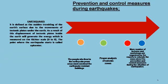The second disaster is earthquakes. An earthquake is defined as the sudden trembling of the earth's surface due to the movements of tectonic plates under the earth. The displacement of tectonic plates generates energy, which is measured on the Richter scale, generally from zero to nine. The point where the earthquake starts is called the epicenter.